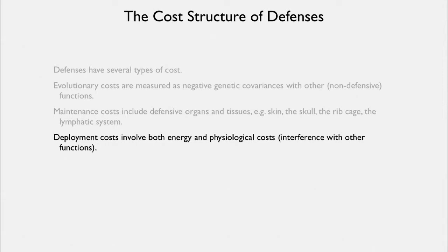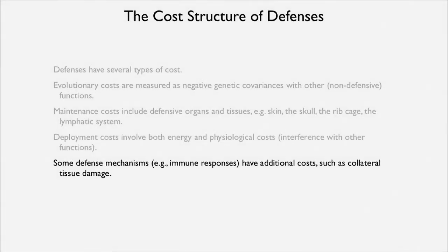Then there are deployment costs — things like energy and physiological costs that can interfere with other functions. You may have noticed how tired you get when you get sick; that's a reallocation of deployment. There are also immune responses that generate tissue damage through inflammation, and those can amount to serious illnesses in themselves.